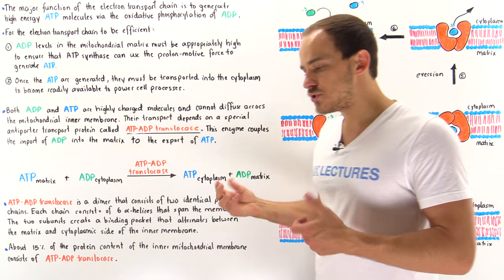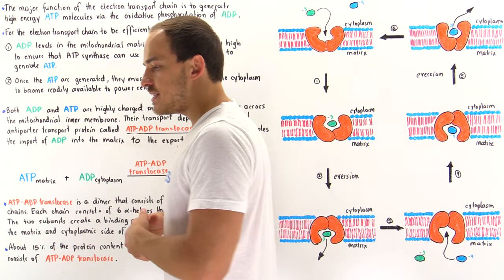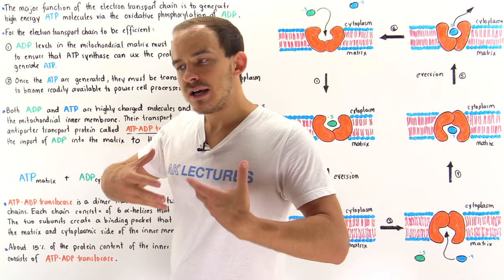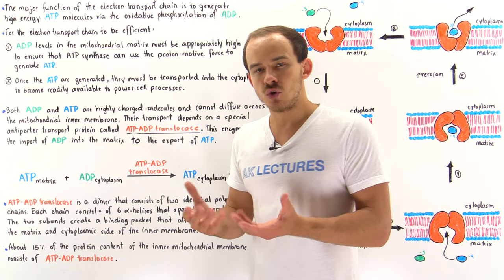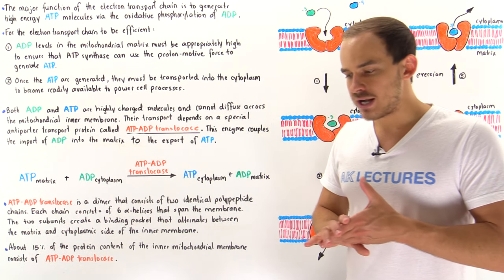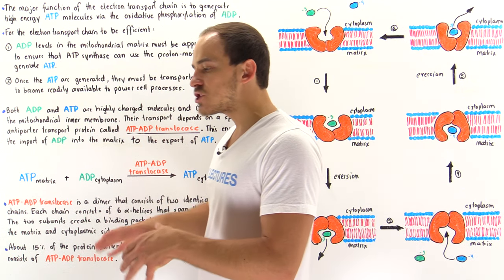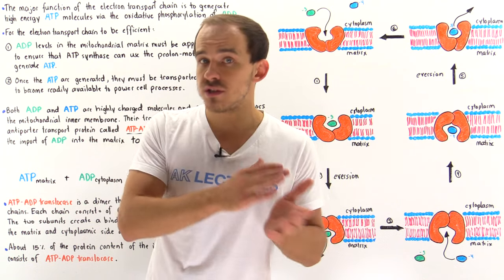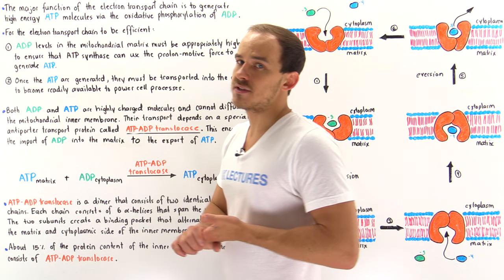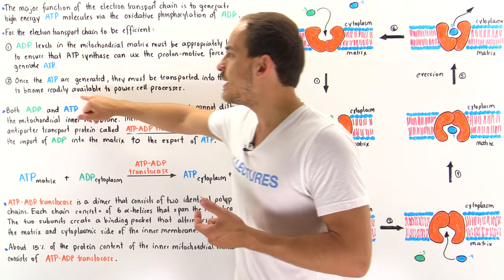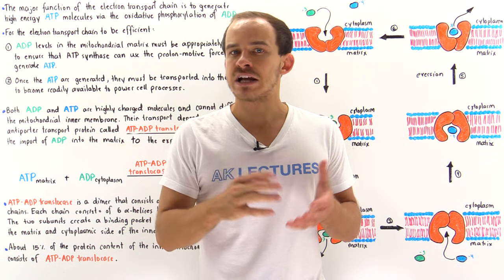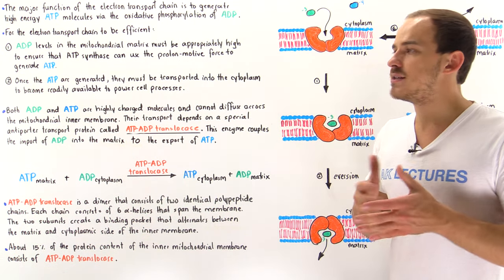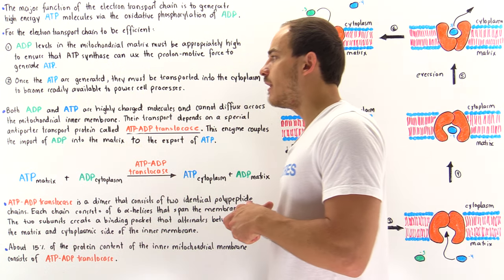Once we form these ATP molecules, we don't want to keep them in the matrix of the mitochondria. We want to move those ATP molecules out of the matrix and into the cytoplasm of the cell so that the ATP can become readily available to power all the different types of biological processes that exist within the cytoplasm of the cell.